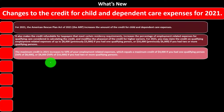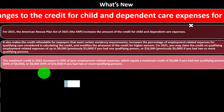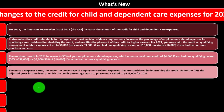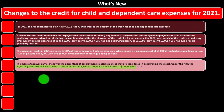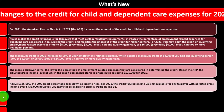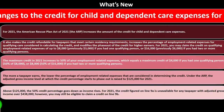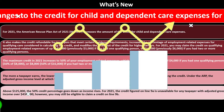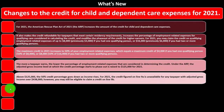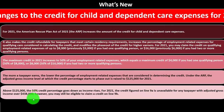The credit caps out at two qualifying persons. The more a taxpayer earns, the lower the percentage of employment-related expenses considered in determining the credit. Under the ARP, the adjusted gross income level at which the credit percentage starts to phase out is raised to $125,000 for 2021. Above $125,000, the 50% credit percentage goes down as income rises, with the phase-out adjusting that percentage.